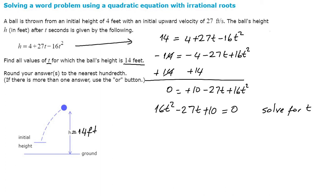So the formula: x1 comma 2 is equal to negative b plus or minus square root of b squared minus 4ac divided by 2a.